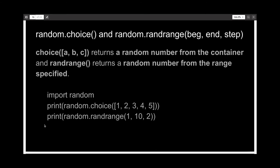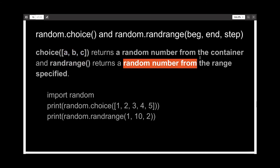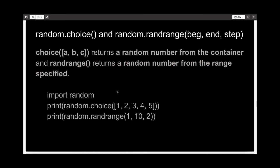The first function we want to talk about is the choice function. It will return a random number from the range you specified. This works much in the same way as the range function which is used with the for loop.